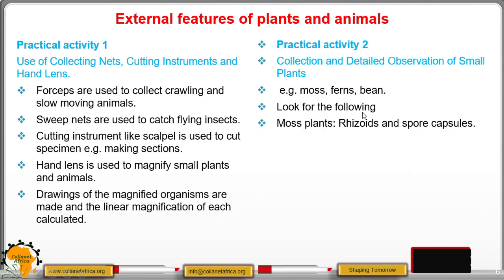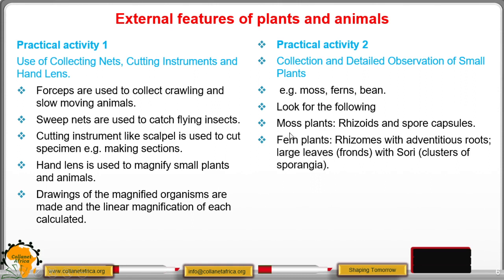In moss plants, ensure you get a moss plant with rhizoids and spore capsules. These are just found in the damp places within our school compound and even our homes. For ferns, we just have to look at the rhizomes with adventitious roots and you have these enlarged leaves, that is the frond and sori.